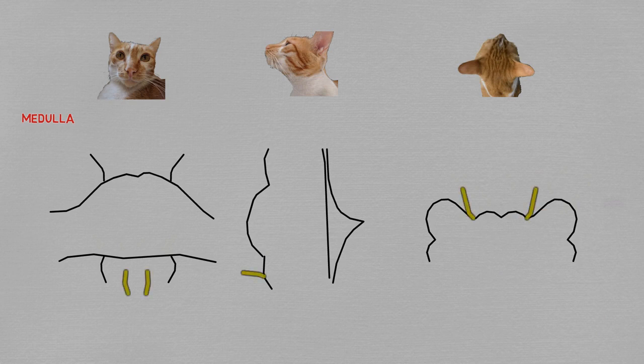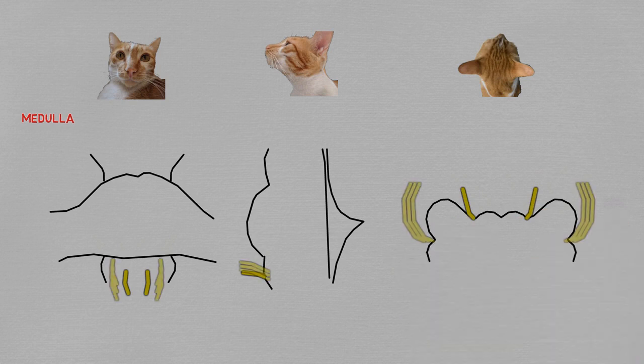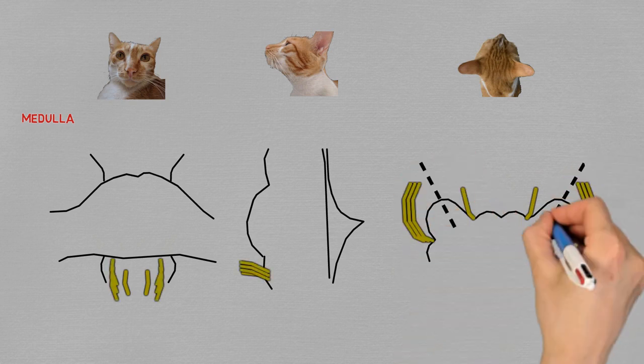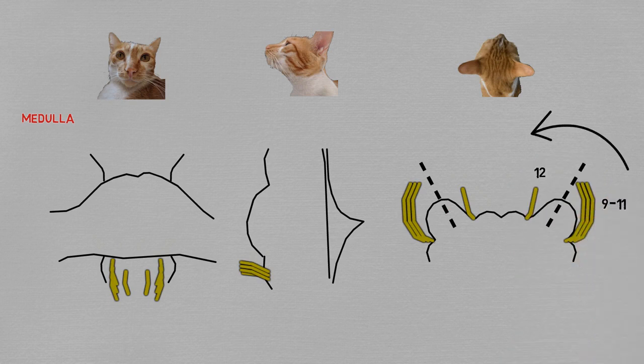On the other side of the olives there are the posterolateral sulci, where pairs 9, 10, and 11 pop up. The nerve that's more medial has the bigger number, while the more lateral and posterior nerves are numbered before it.